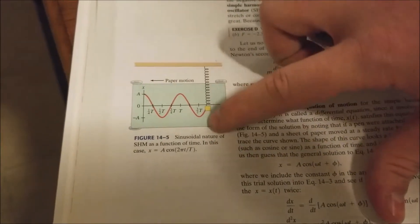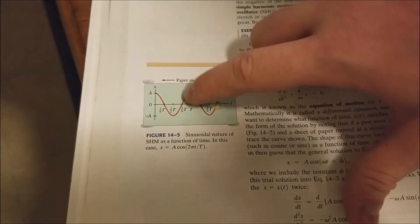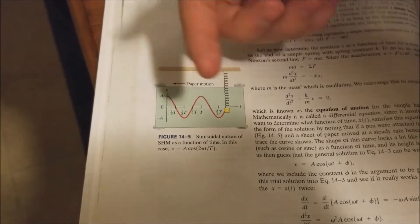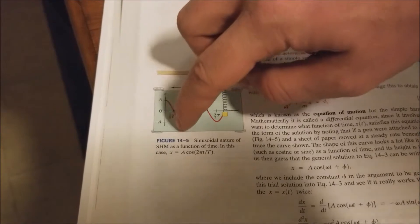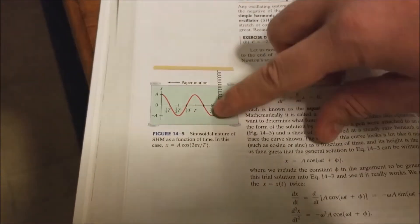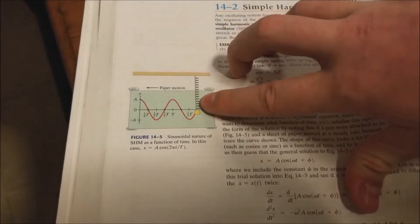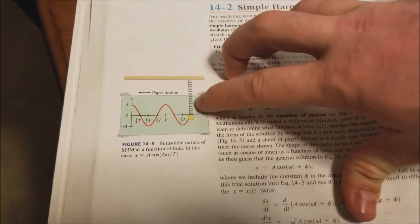The spring oscillates back and forth the same distance, and as that's happening this paper is moving and it's drawing a sinusoidal curve on there. This is basically what we are doing today, only instead of a spring we are using a pendulum.